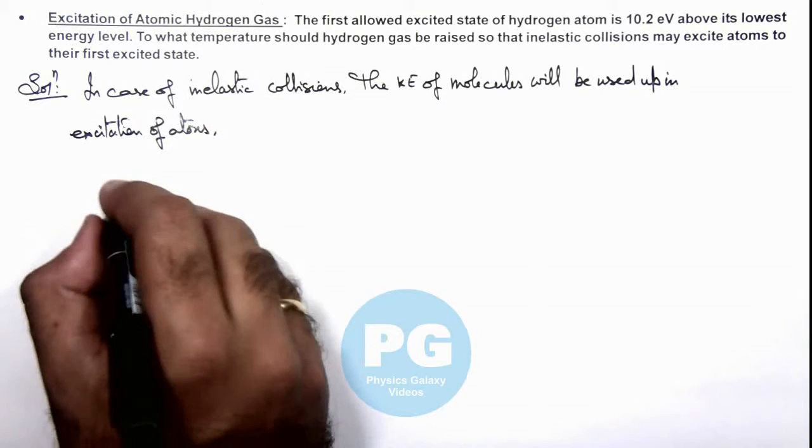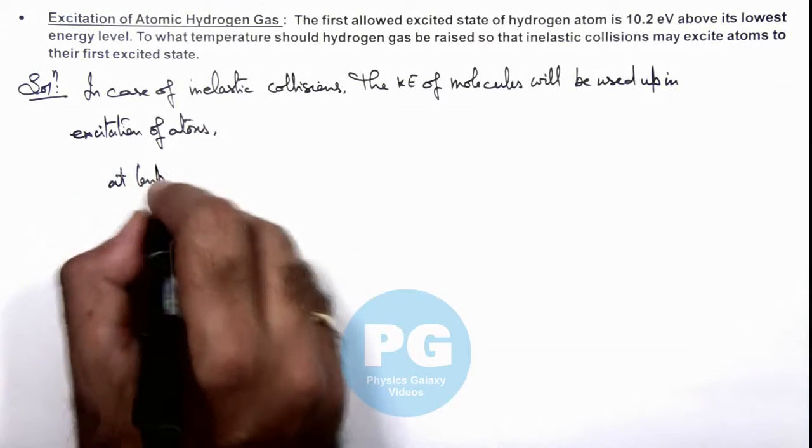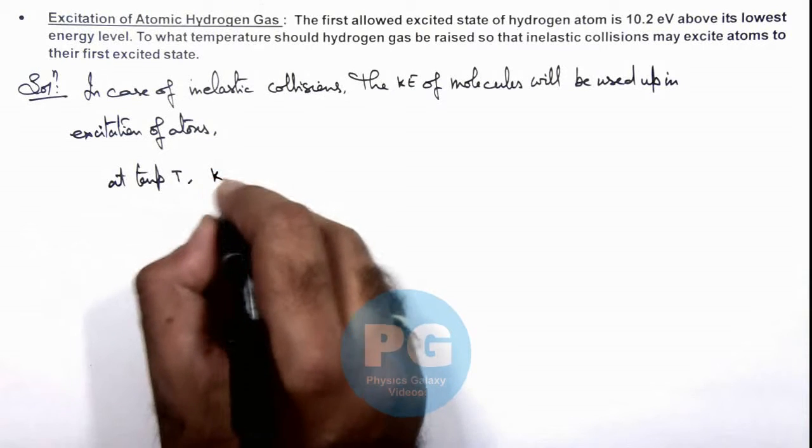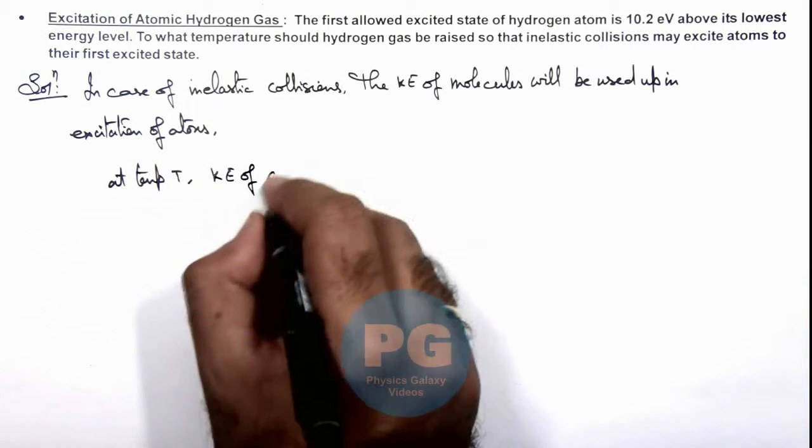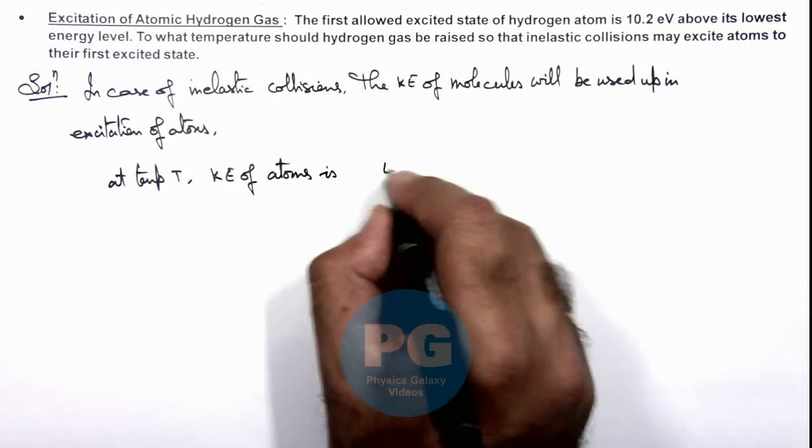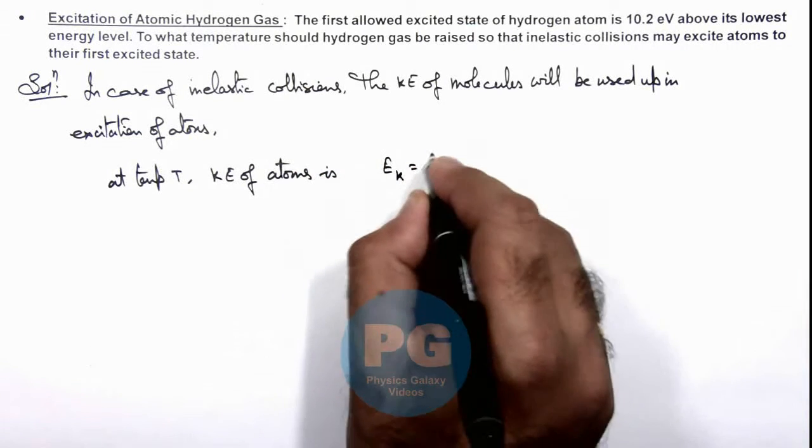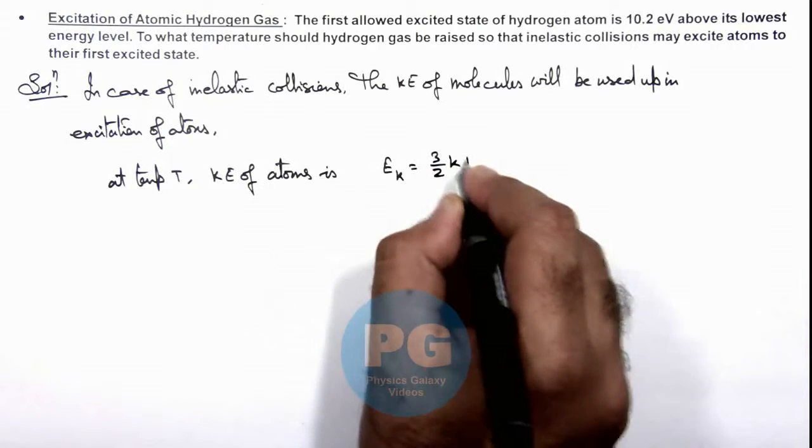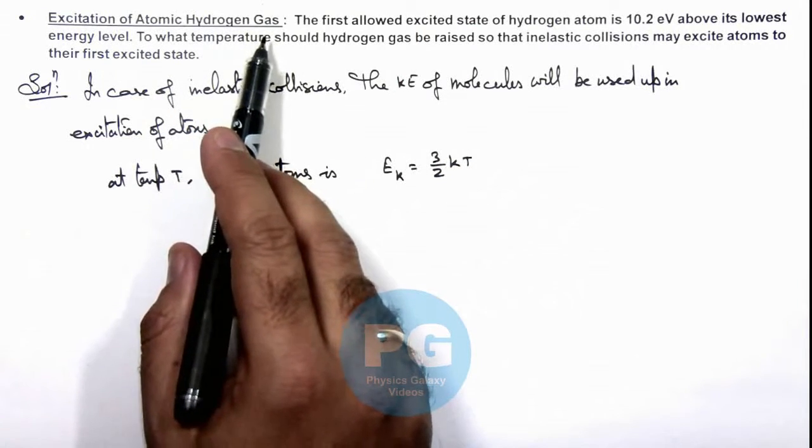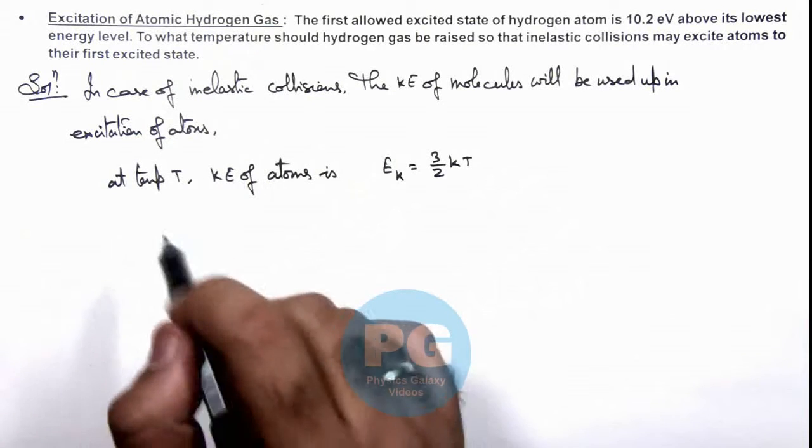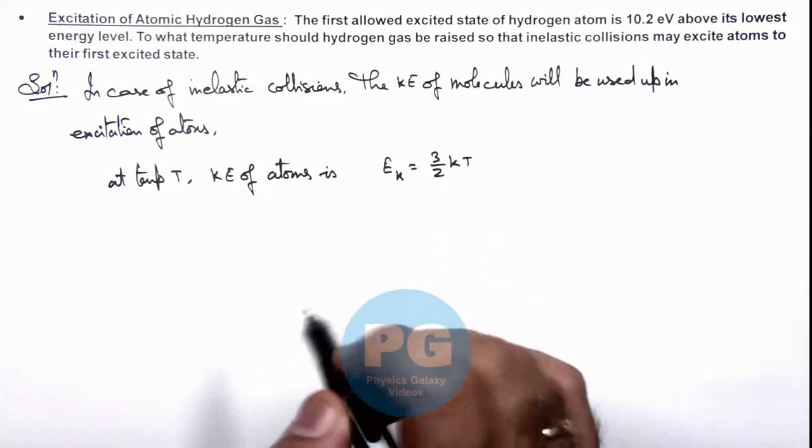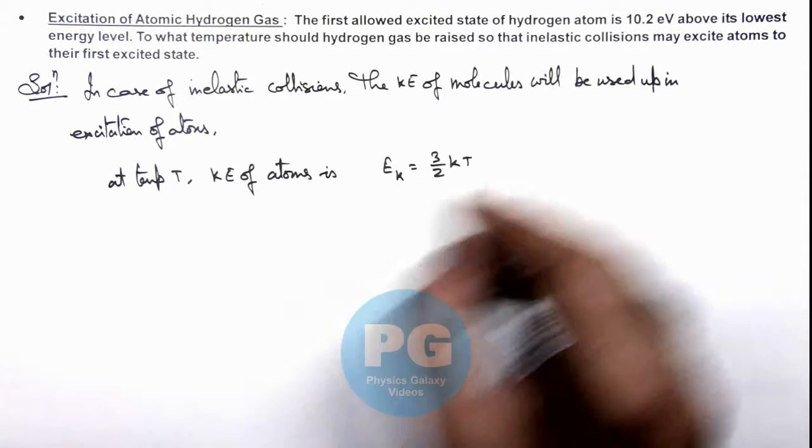At temperature T, kinetic energy of atoms is 3/2 kT, because for atomic hydrogen these are monoatomic gas molecules so their degree of freedom is 3 only. According to the law of equipartition of energy, the molecular kinetic energy is 3/2 kT.